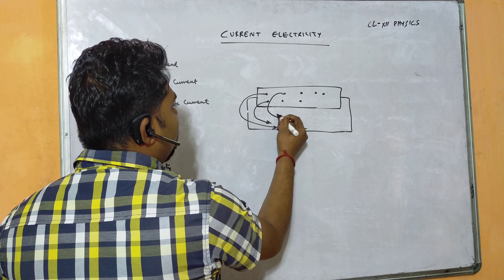Electric current is defined as the rate of flow of charge per unit time. That means the number of charges flowing per unit time is electric current. When a small amount of charge passes through a unit area in a small time, we consider it as average current, and sometimes as instantaneous current. Mathematically, electric current I equals Q divided by T.